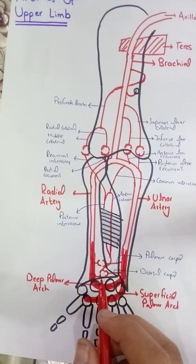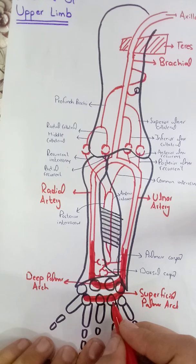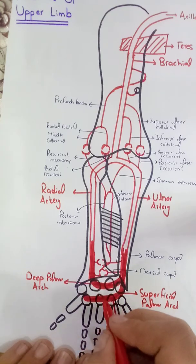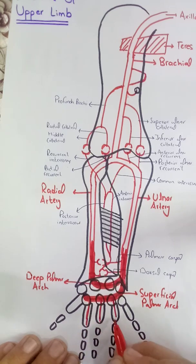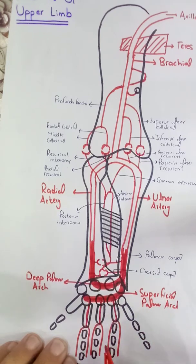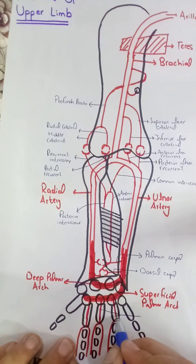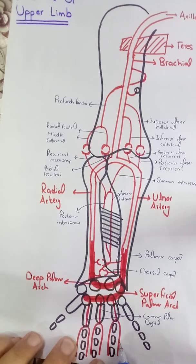The superficial palmar arch gives the common palmar digital arteries to the metacarpals, which then divide into the proper palmar digital arteries that move on both sides of the phalanges. Labeling: these are the common palmar digital arteries and these are all the proper palmar digital arteries.